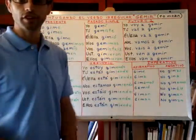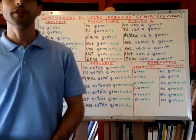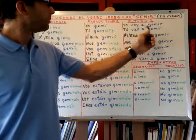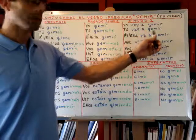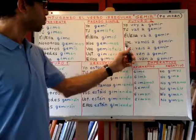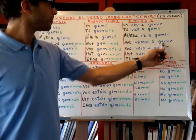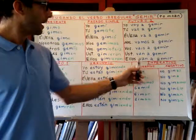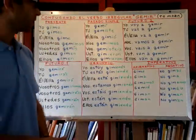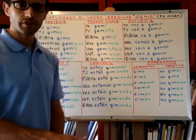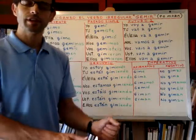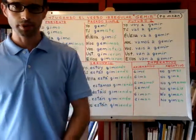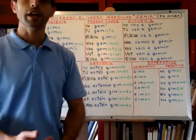The other way of speaking in the future, instead of saying you will moan, is you are going to moan — using the verb to go as auxiliary verb, in Spanish as well. Yo voy a gemir — I am going to moan. Tú vas a gemir. Él va a gemir. Nosotros vamos a gemir. Vosotros vais a gemir. Ustedes van a gemir. And ellos van a gemir. For example: si ellos hacen esto, van a gemir de dolor — if they do this, they are going to moan in pain.